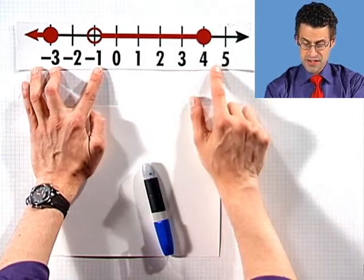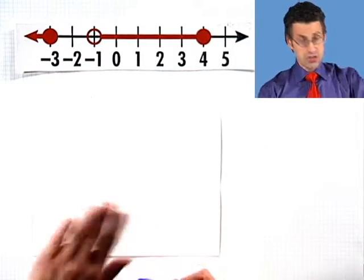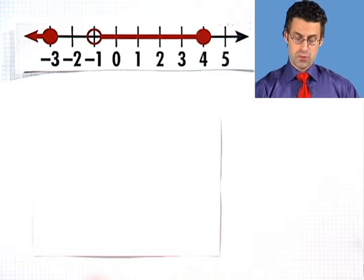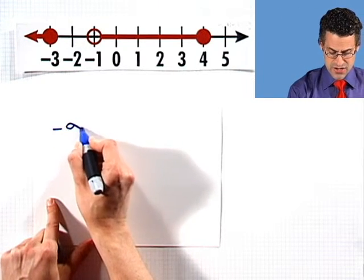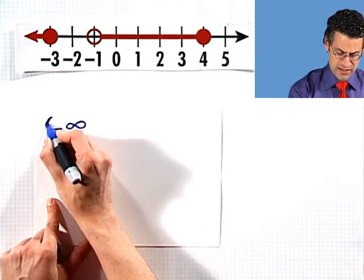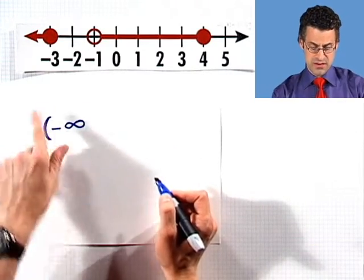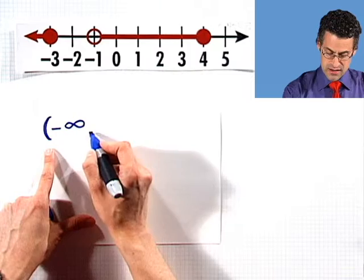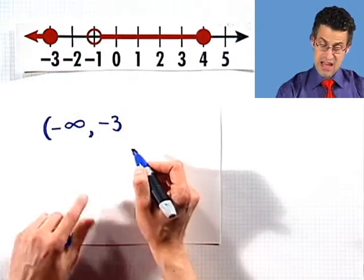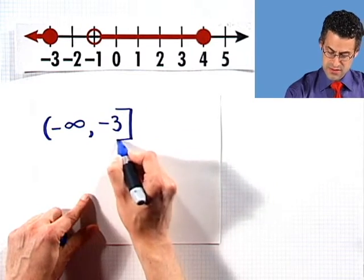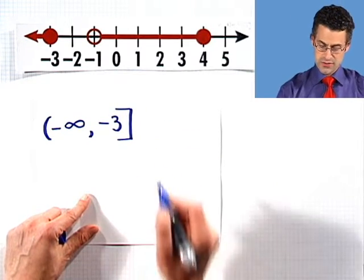So how would I write that in interval notation? I'd say, you can start as far to the left as you want. So we'd write negative infinity. That means as far to the left as you can imagine. Now of course negative infinity turns out not to be a number so we don't include it. So I use this kind of a parenthesis. And I go all the way up to negative three. And since it's colored in, that means that I'm allowed to equal that. And so I use this kind of closed interval.